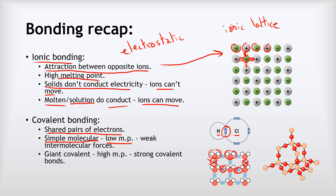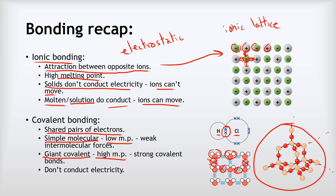Some covalent substances are what we call giant covalent. These have a very high melting point because in the giant covalent structure we have a repeating pattern of millions of atoms in every direction joined by strong covalent bonds — this pattern just goes on and on in every direction. Neither giant covalent nor simple molecular substances conduct electricity because there are no electrons free to move. The one exception is graphite, one of our allotropes of carbon, which does conduct.